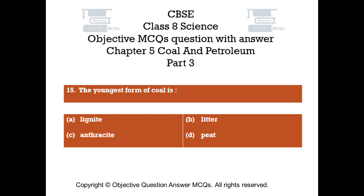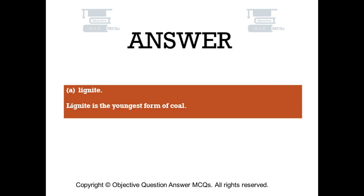Question number 15. The youngest form of coal is: Option A: Lignite. Option B: Litter. Option C: Anthracite. Option D: Peat. The right answer is Option A, Lignite. Lignite is the youngest form of coal.